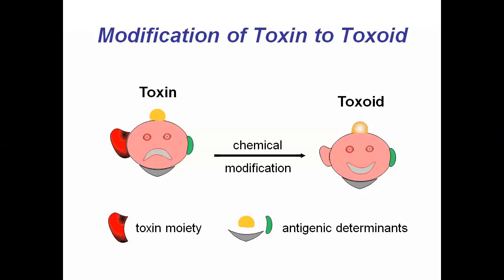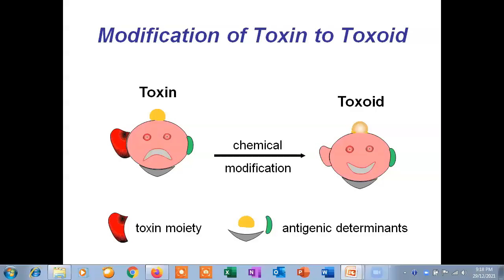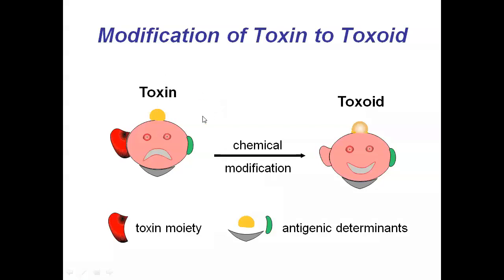In this way, microorganisms that enter the body produce toxins, and those toxins can be converted into toxoids. The diagram shows the different parts of the toxin, and after chemical modification — when the toxin moiety is removed — it is converted to a toxoid. That toxoid is then used for the development of antibodies in the body.